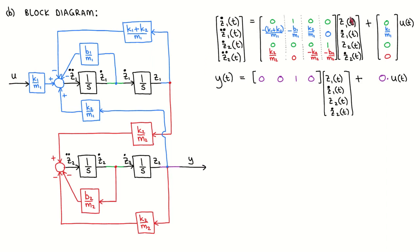The first line of the state equation says that z1-dot is equal to the state z1-dot, which is depicted by a green connection. Similarly, the third line of the state equation says that z2-dot is equal to the state z2-dot, which is depicted by another green line. In the output equation, we see that the output is equal to the state z2, which is depicted by a purple line. The second line of the state equation says that z1-double-dot is a scaled sum of the states and the input, so I drew a summation block and connected the scaled states and input. Similarly, I drew the fourth line of the state equation as shown.